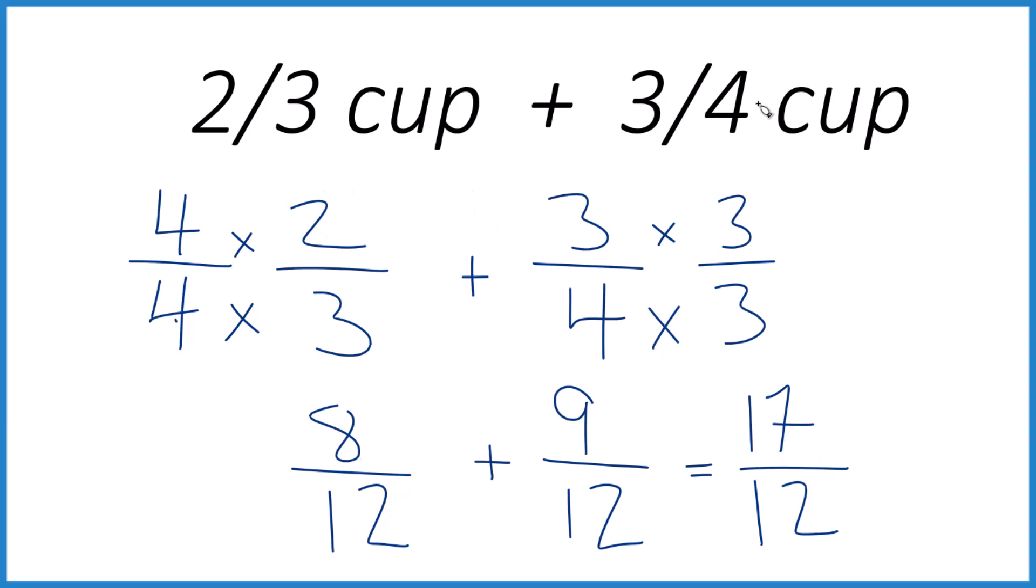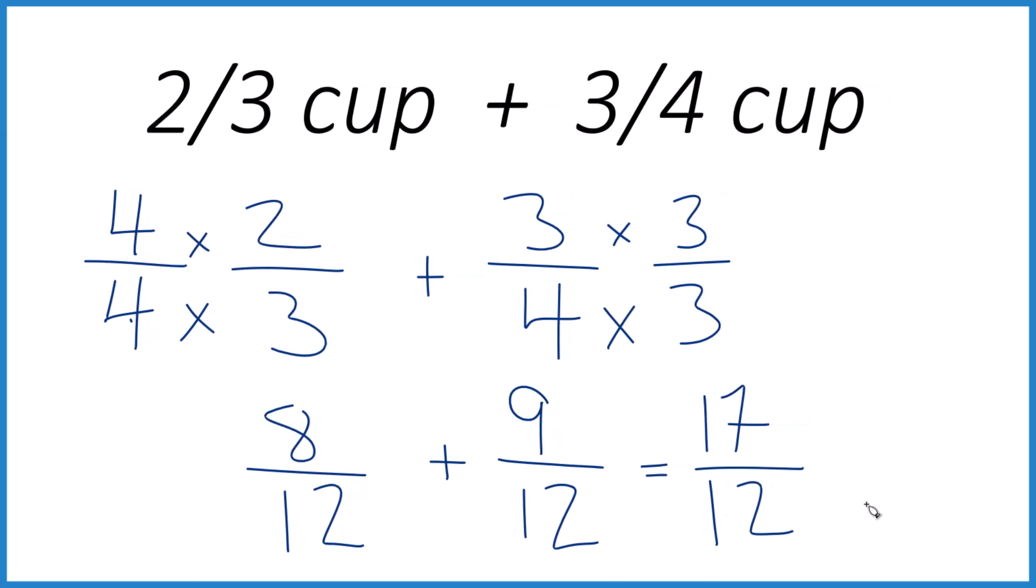So two-thirds of a cup plus three-fourths of a cup is seventeen-twelfths of a cup. This is an improper fraction, the numerator is bigger than the denominator.